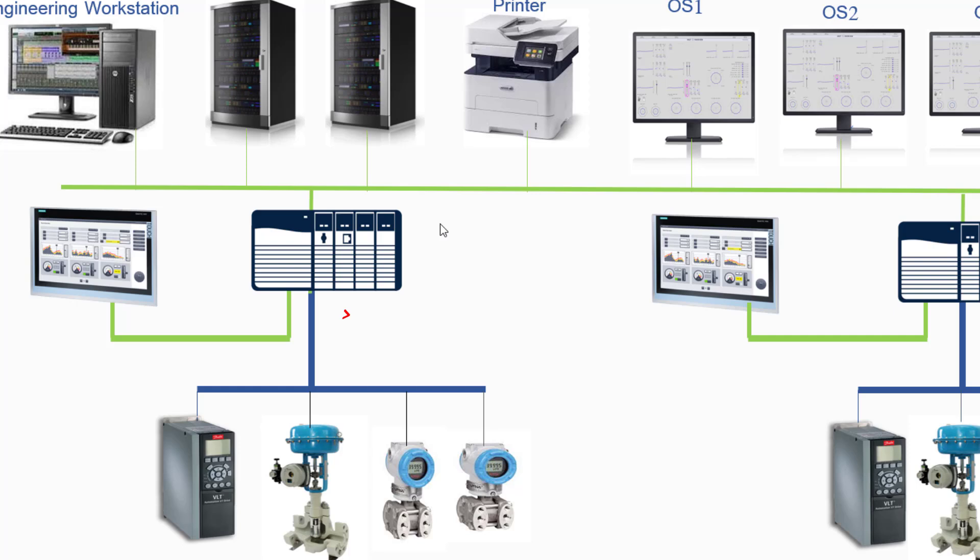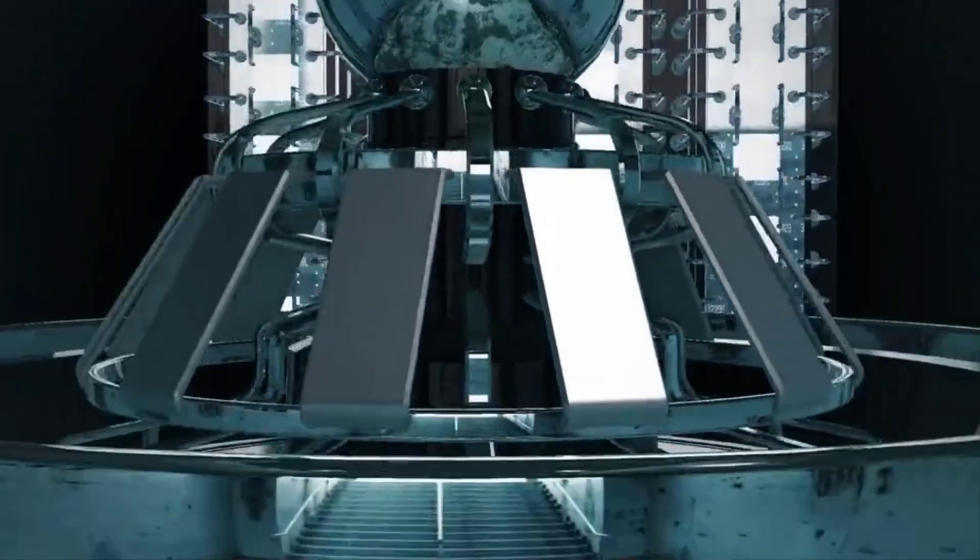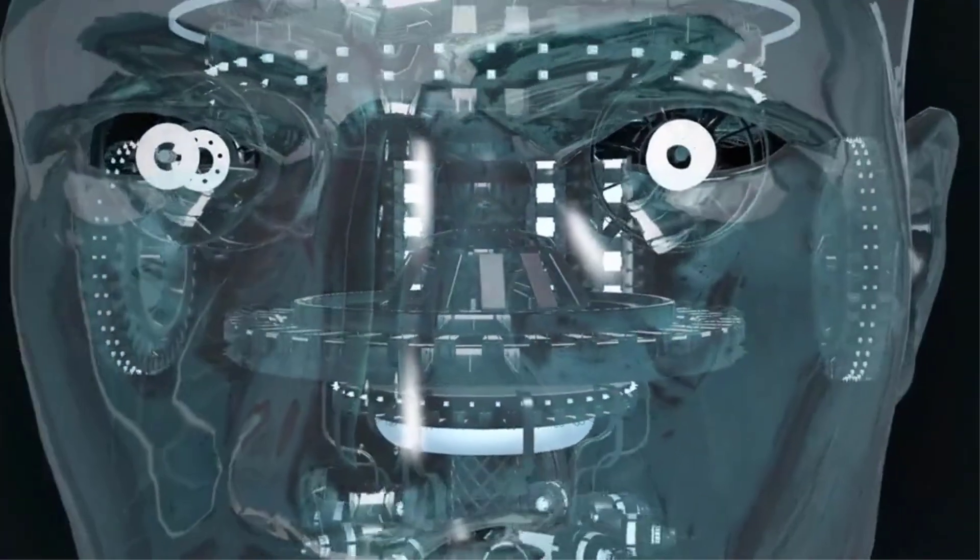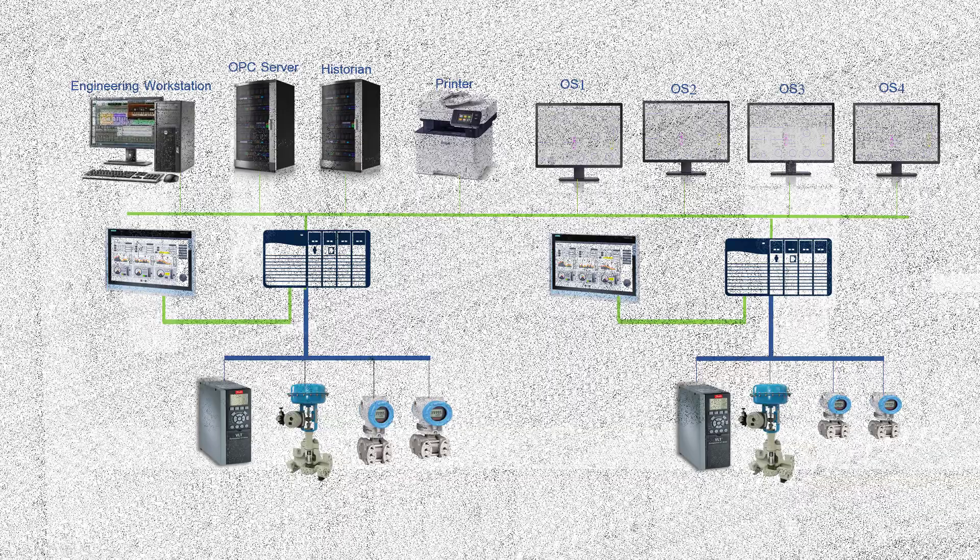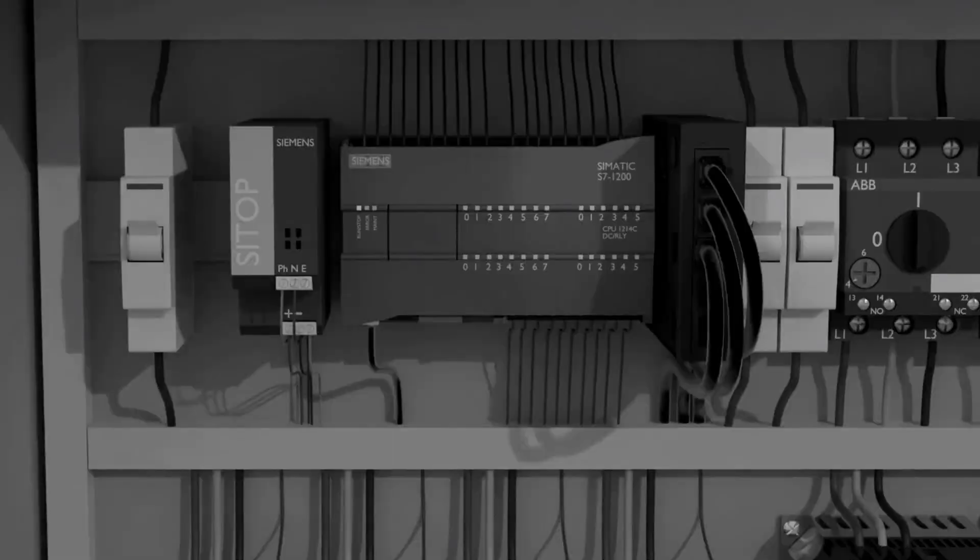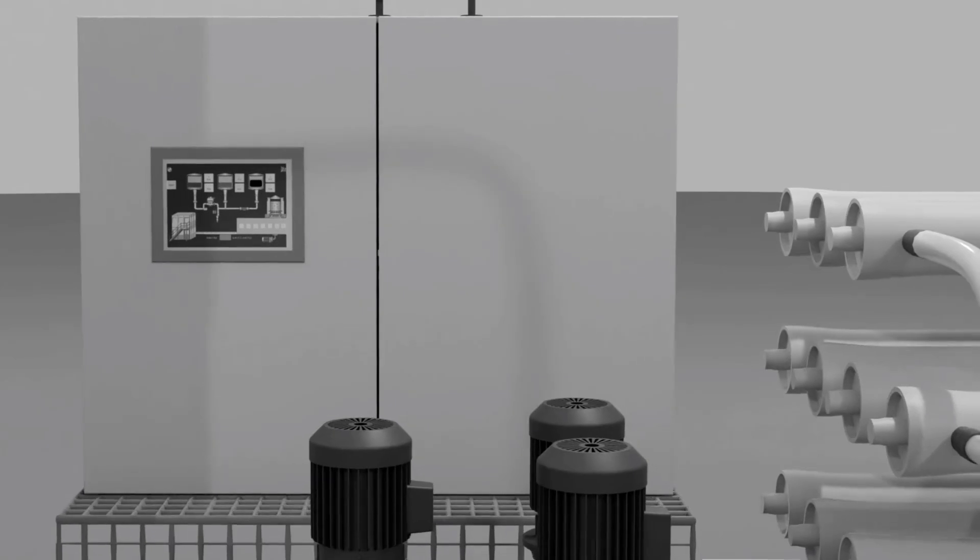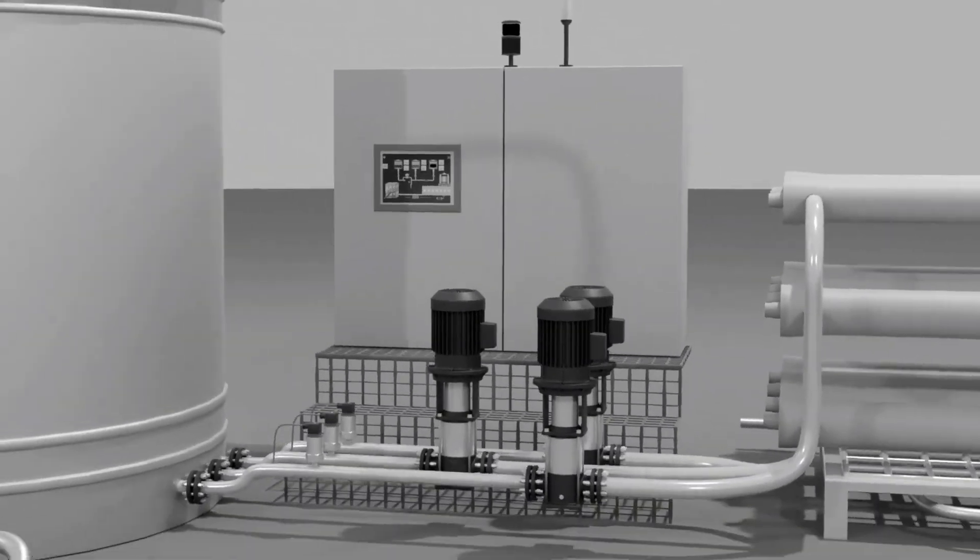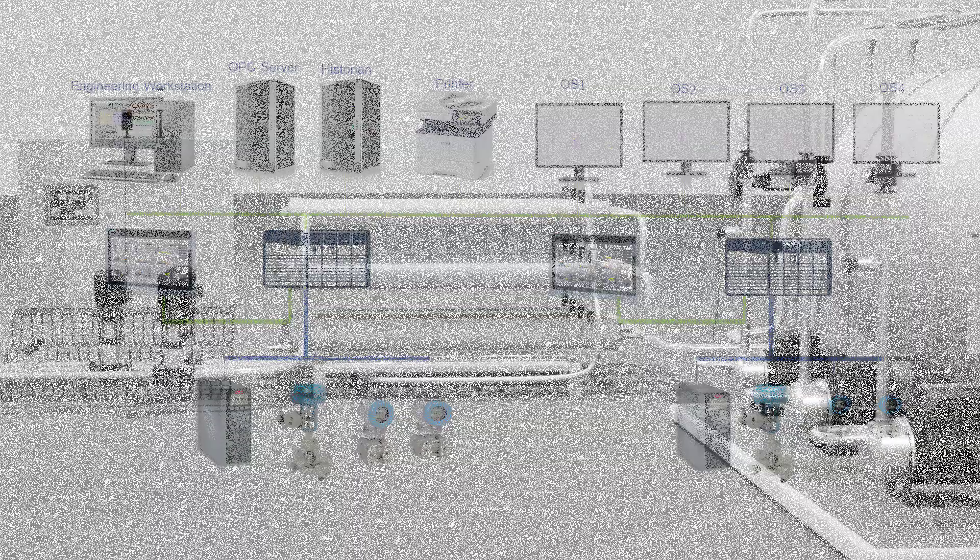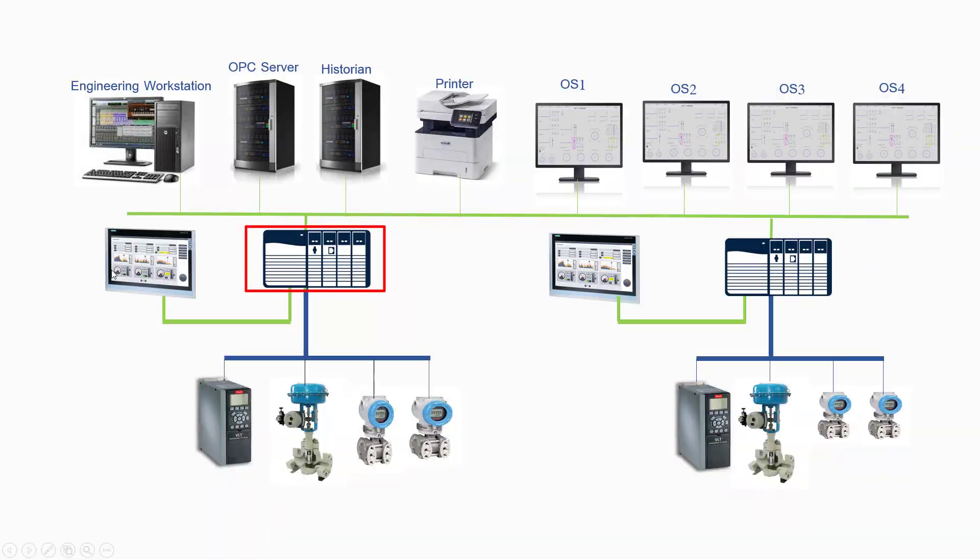Now, this data goes to PLCs, which are like the brains of the operation. PLCs analyze the data and decide what actions to take. For example, if there are some changes required in process, PLCs send commands to final control elements like motors or valves to meet desired process requirements.